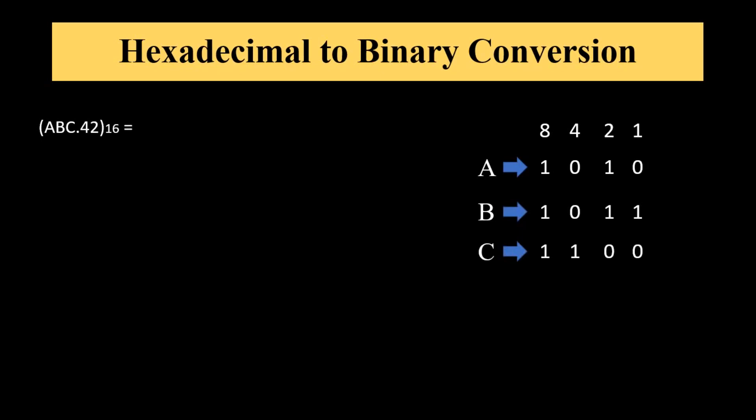Now after the point there are 2 digits, 4 and 2. 4 will be represented as 0100 and 2 will be represented as 0010. The binary number will be 1010 1011 1100 point 0100 0010.